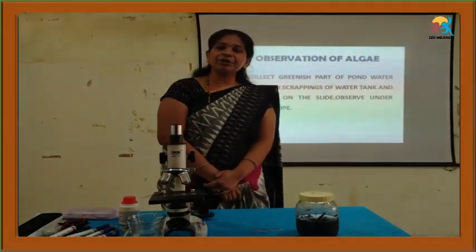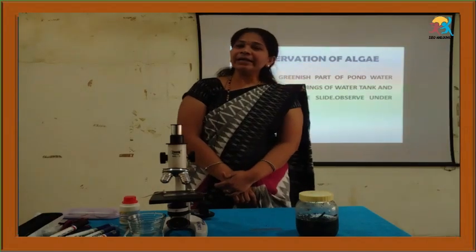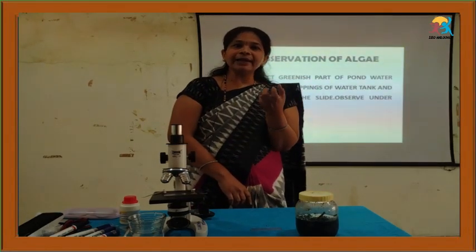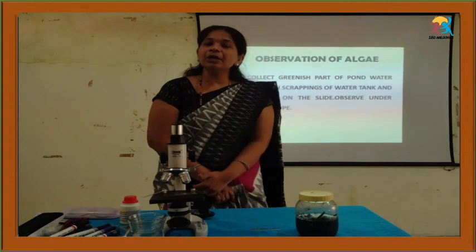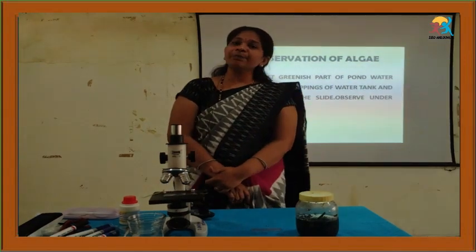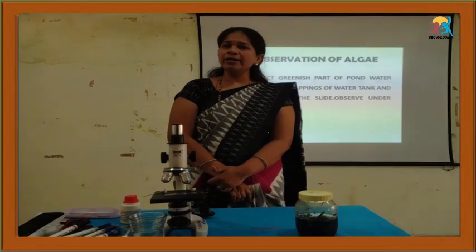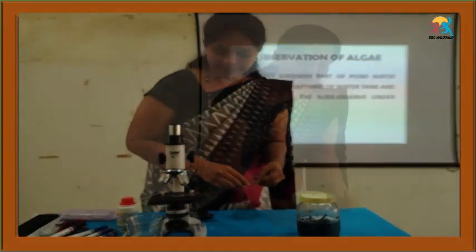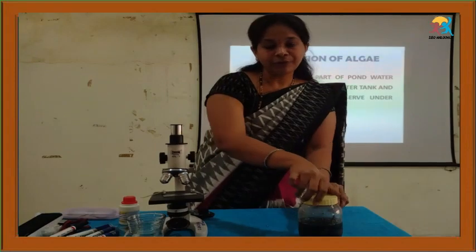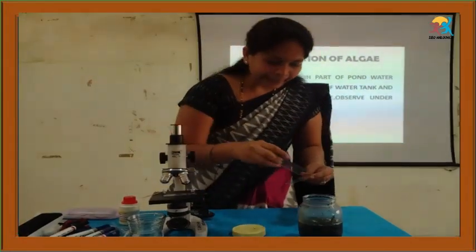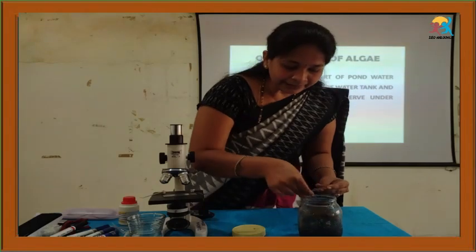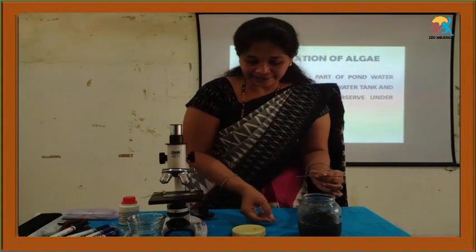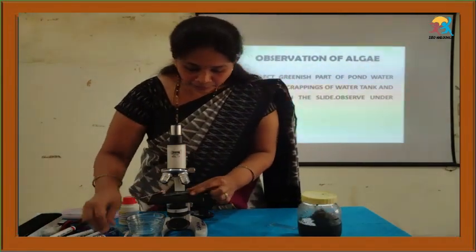Next, observation of algae. We usually observe greenish-colored organisms growing in ponds — algae gives a greenish color to pond water. Collect the greenish part of pond water or greenish scrapings from a water tank. Add the thin thread-like structures onto the slide and observe under the microscope.